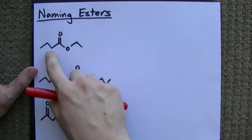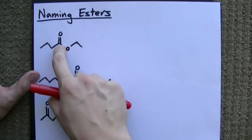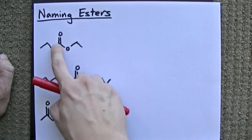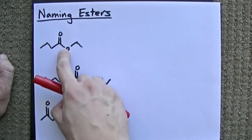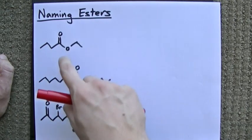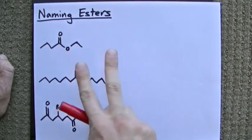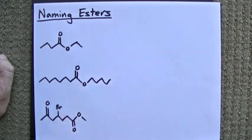An ester is any carbon chain that has a double bonded oxygen in the middle and a single bonded oxygen to the exact same carbon. What you'll notice is that the carbon chain is actually broken up into two separate carbon chains. That's a big deal and it's going to play a role in how we name it.